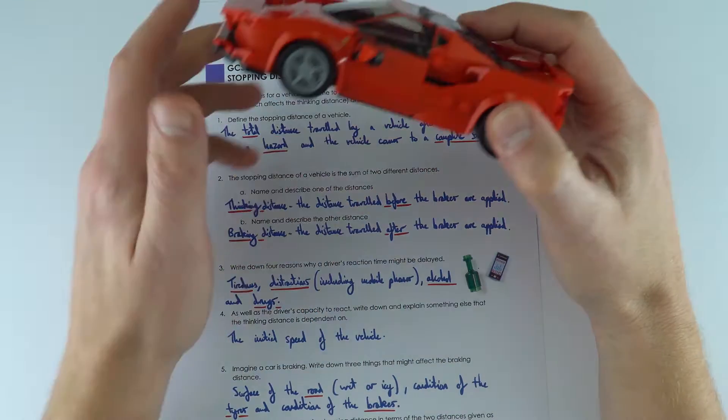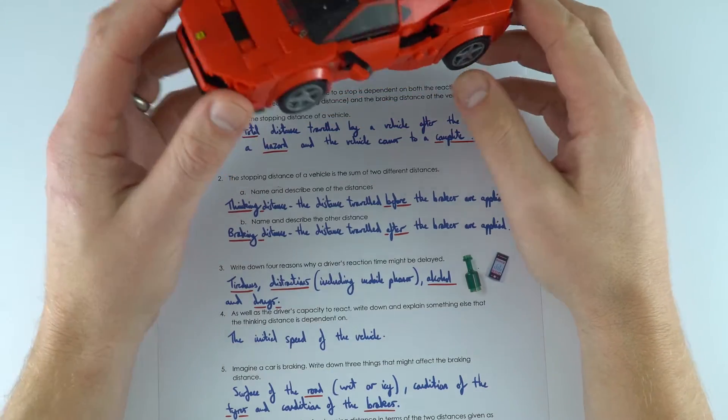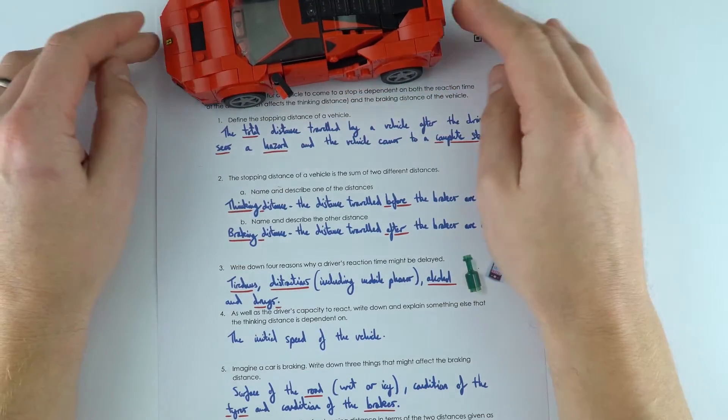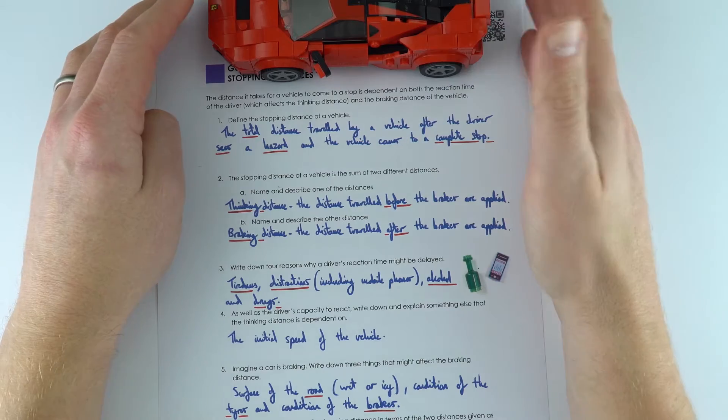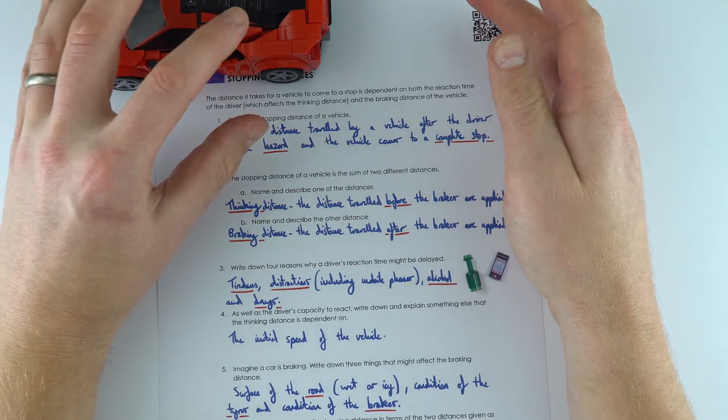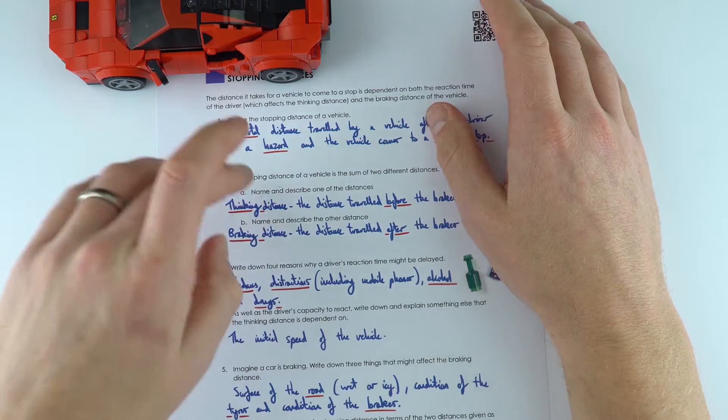This video is looking at stopping distances, and basically this is the total distance traveled by a vehicle after the driver sees a hazard and then the vehicle comes to a complete stop. And it's made out of two different distances.